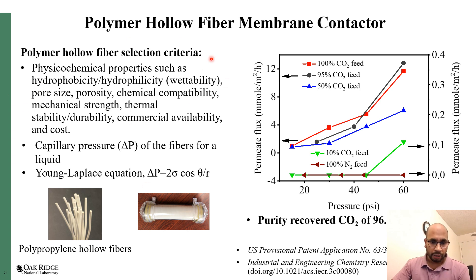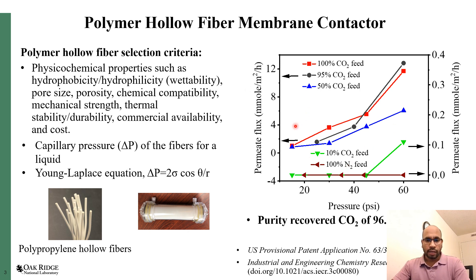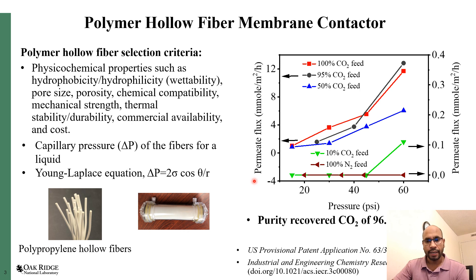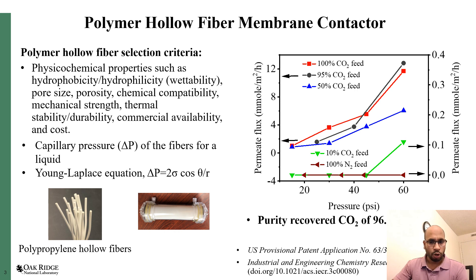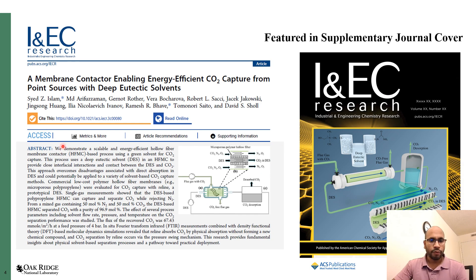Meeting those criteria, we identified porous polypropylene hollow fibers and conducted single gas as well as mixed gas measurements. The results show that the membrane contactor can selectively separate CO2 from a mixed gas of nitrogen across feed concentrations of 10%, 50%, and 100%, with recovered CO2 purity of about 97%. We have filed a provisional patent application on this work, and also published the proof-of-concept in Industrial and Engineering Chemistry Research, featured on the supplementary cover page.